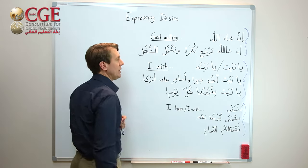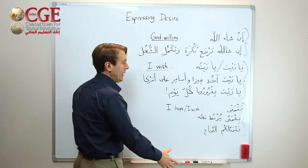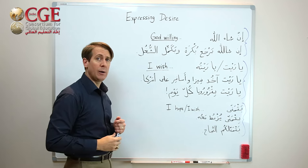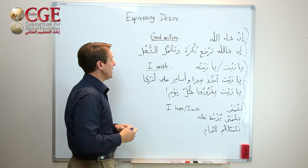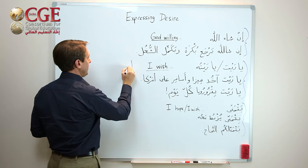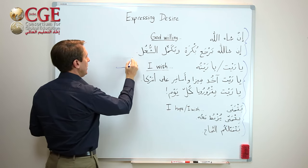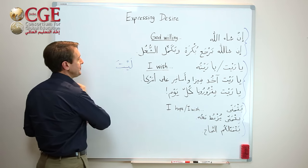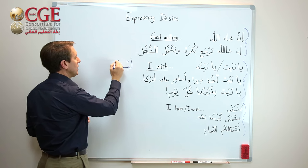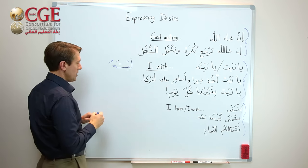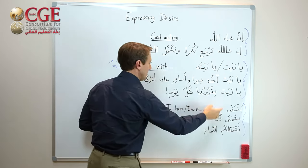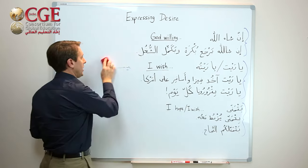The second way is 'yareet' or 'yareeto.' All of these — except for this one — are used in fusha. In fusha it's not 'yareet,' it's 'layta,' or you can say 'layta hu.' So 'yareeto' in amiyah corresponds to 'layta' or 'layta hu' in fusha. They mean the same thing.